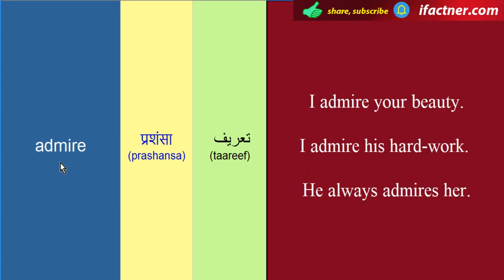Aaj ka teesra word hai admire. Admire ka meaning hota hai prashansa, yaani ke tarif karna — kisi ki tarif karna. Pehla sentence: 'I admire your beauty' — mein aapke husn ko sarhaata hoon, aapke husn ki parashansa kerta hoon, aapke husn ki tarif kerta hoon.